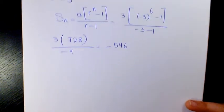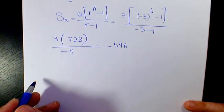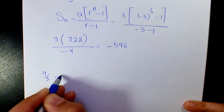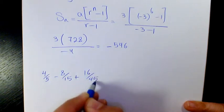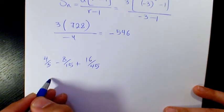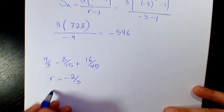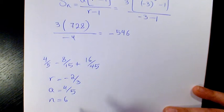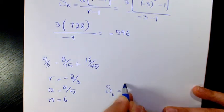Next example: 4/5 - 8/15 + 16/45, and so on. The common ratio is negative 2/3, and a is 4/5, with n equal to 6.